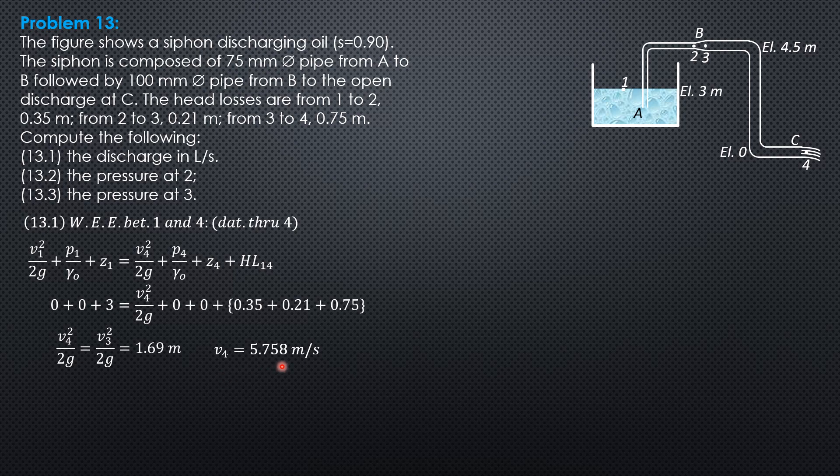The discharge, therefore, is π/4 times the diameter (100mm or 0.1 meter). π/4 times 0.1 squared times 5.758 times 1,000. The discharge is 45.22 liters per second. For the pressure at 2, we write energy equation between 1 and 2, and this time, still, the datum through elevation 4 or at elevation 0.